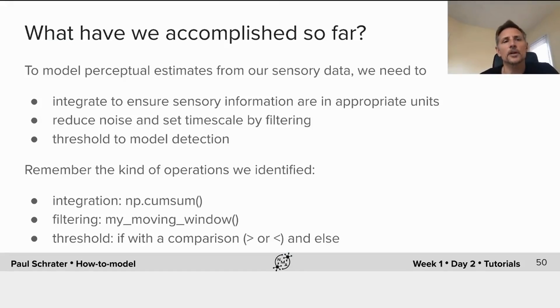What have we accomplished so far? Well, we've seen that to model our perceptual estimates from our sensory data, we need to integrate to ensure sensory information are in the appropriate units of velocity. We need to reduce noise and set the time scale by filtering. We need to threshold to model the detection process, which will distinguish cases in which we're actually moving from those in which we're not with some confusion.